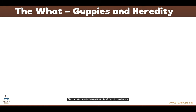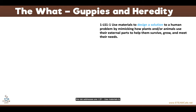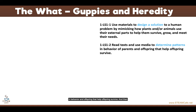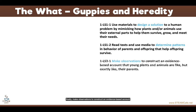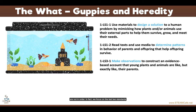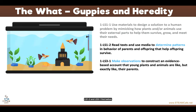Let me give you an example of a lab that our first grade teachers do to teach heredity. The performance expectations this lab addresses are: LS1-1 — use materials to design a solution to a human problem by mimicking how plants and/or animals use their external parts to help them survive, grow, and meet their needs; LS1-2 — read texts and use media to determine patterns in behavior of parents and offspring that help offspring survive; and LS3-1 — make observations to construct an evidence-based account that young plants and animals are like, but not exactly like, their parents. When kids do this lab, these standards are not addressed in order — we focus on LS1-2 and LS3-1 first, before going to LS1-1.